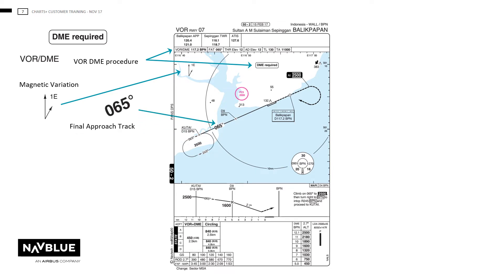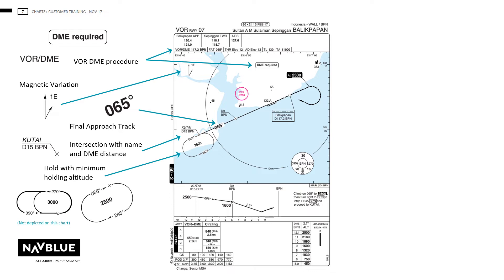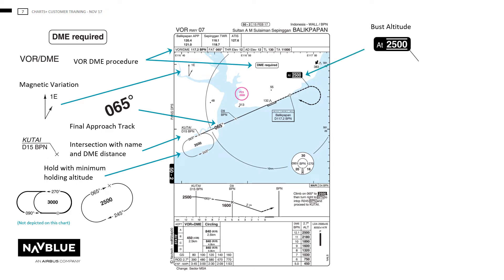The final approach track on charts will be shown in a large bold font. The holding patterns with the minimum holding altitude — in this example, NAVBLUE is showing a standard one minute hold. All prohibited, restricted and danger areas are to be shown on all IAC charts.